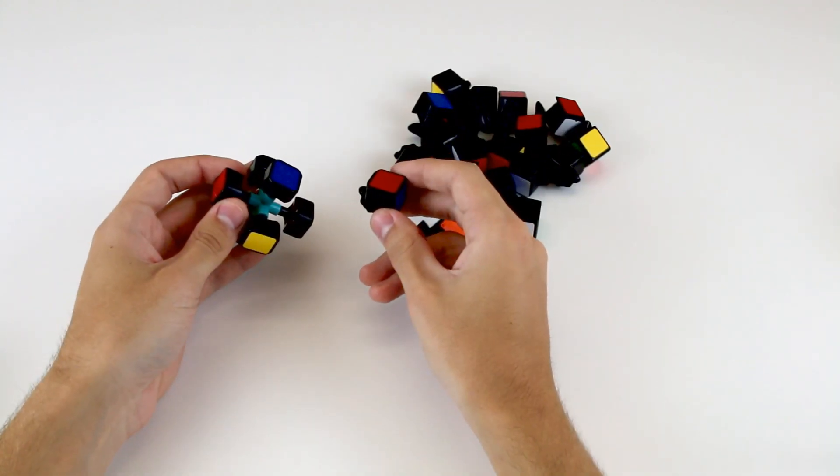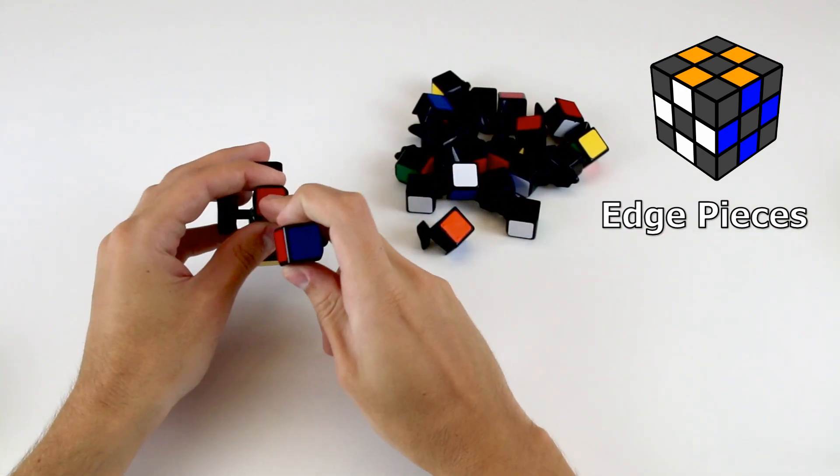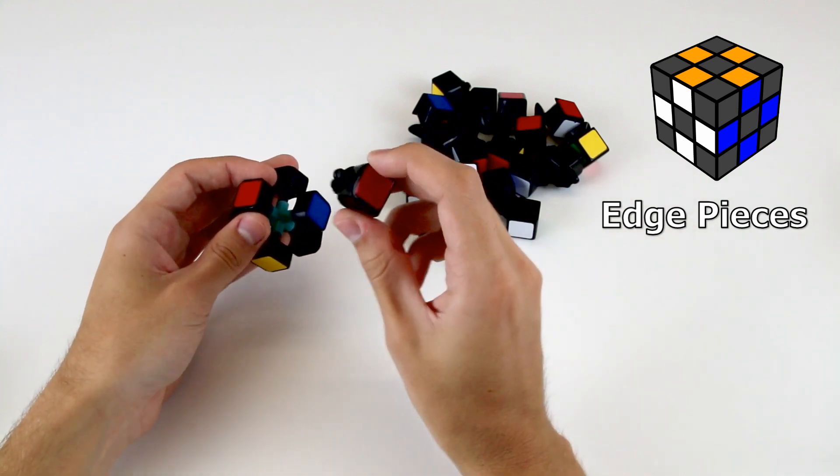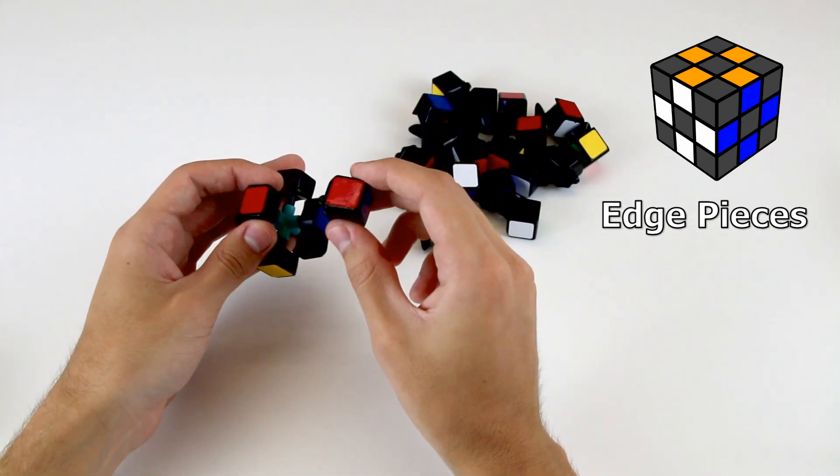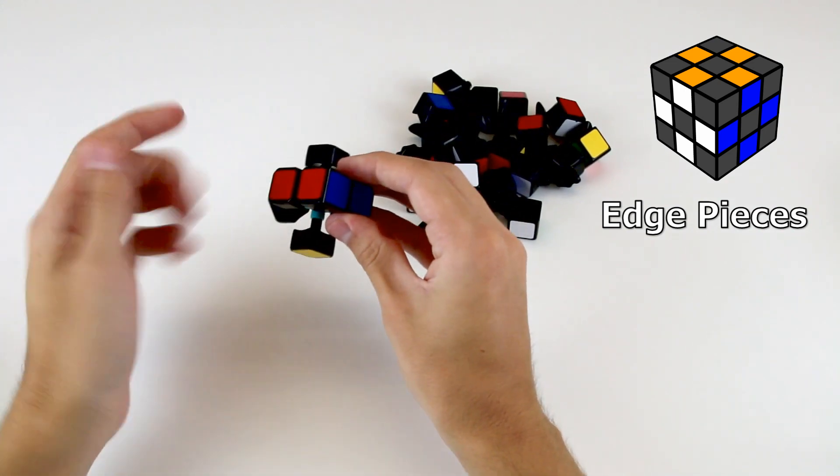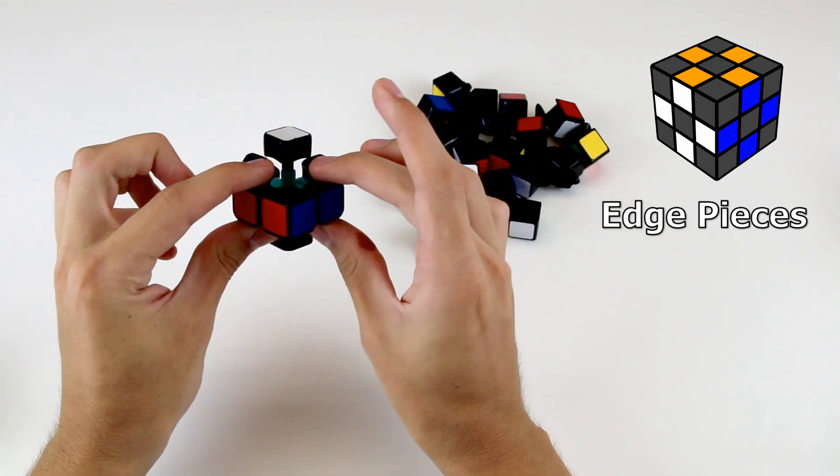The second type of pieces are the edge pieces, which have two stickers on them. So the center pieces have one sticker on them, these edges have two stickers on them. And these are the pieces which lie directly between two center pieces. So when you solve an edge piece, the two colors on the edge piece will match up with the corresponding center pieces of those colors.